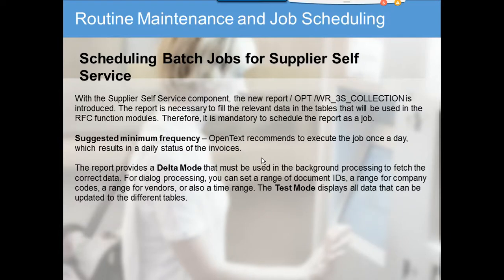With Supplier Self-Service, a new report collection is introduced to fill the relevant data in tables used by RFC function modules. In SAP, an RFC (Remote Function Call) function module is used to connect non-SAP things — for example, connecting from Outlook to SAP requires an RFC. Since the Supplier Self-Service portal is outside SAP, it needs this RFC. The report provides a delta mode so you don't re-fetch all data every time, only the changes.